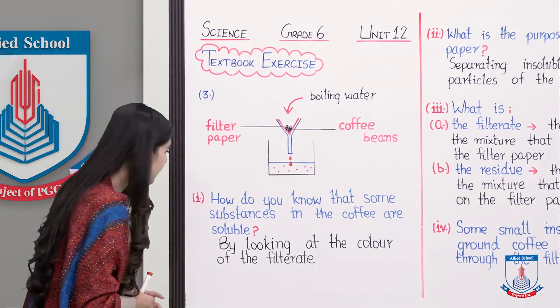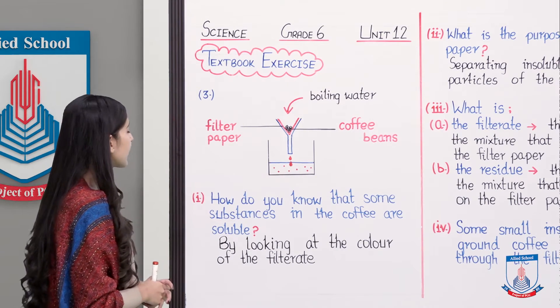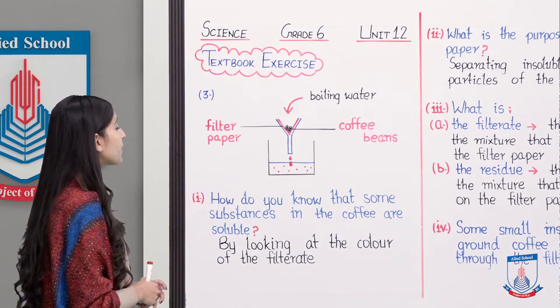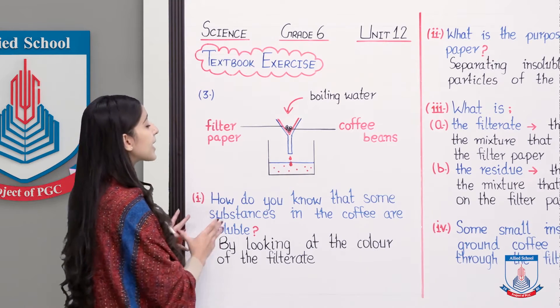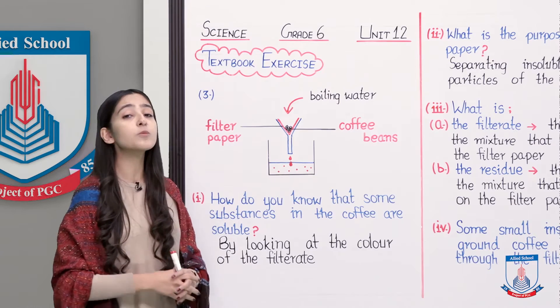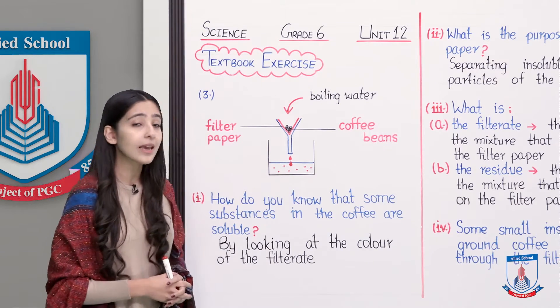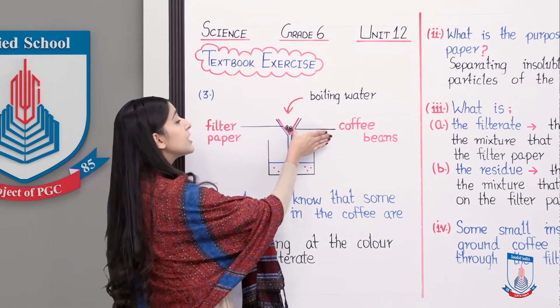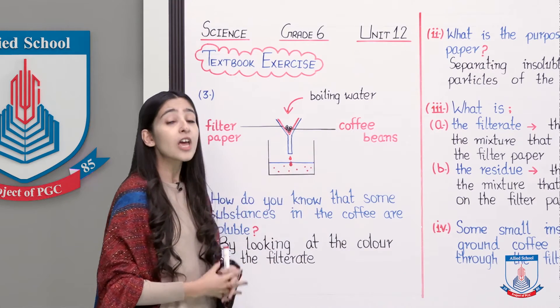So inside the filter paper you placed coffee beans, and over the coffee beans you poured boiling water. After that, the filtrate you have is brown in color. This means some insoluble particles passed through this filter paper. The dotted points I made indicate these are the insoluble particles and very small particles of coffee.